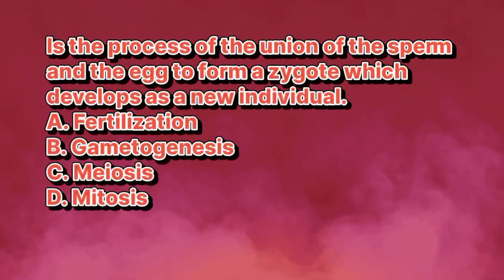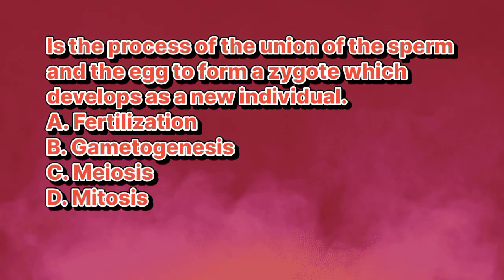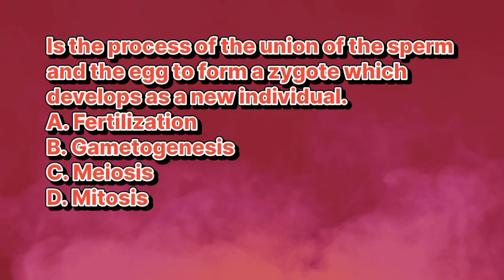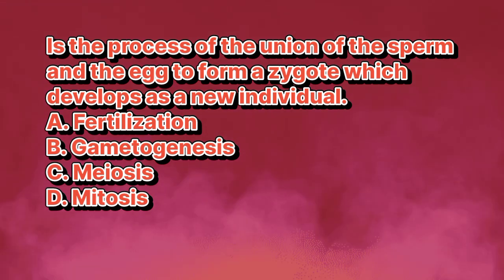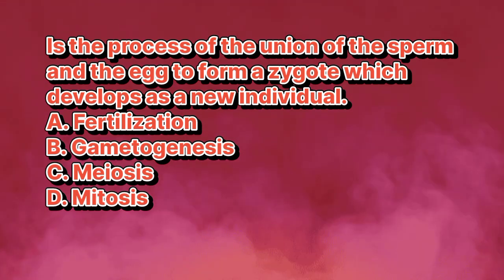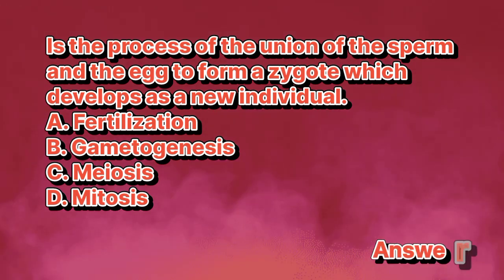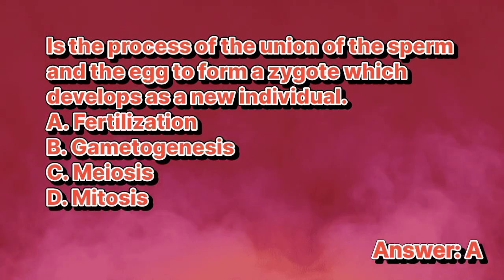What is the process of the union of the sperm and the egg to form a zygote, which develops as a new individual? A. Fertilization. B. Gametogenesis. C. Meiosis. D. Mitosis. The answer is letter A.